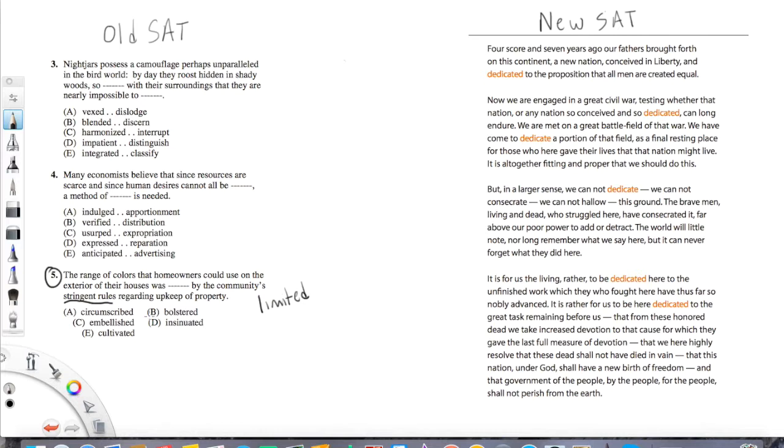Bolstered, you may or may not know, means to support something. Embellished means to exaggerate something. Insinuate means to suggest. And cultivate means to grow. So none of those words meant limited. That means circumscribed must be right. So that's the way we do the old SAT. That's our fancy trick here.